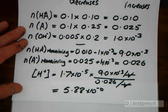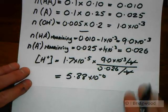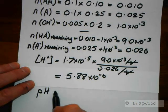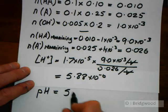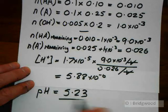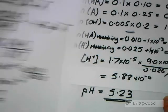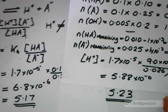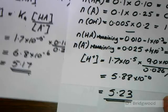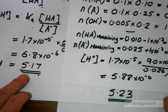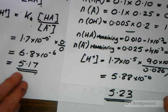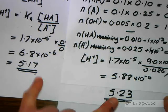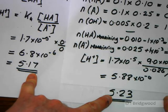And if I take the negative log of 5.88 times 10 to the minus 6, I can work out my pH: 5.23. And you can see that from my previous calculation, we ended up with 5.17. Here, we're ending up with a pH value of 5.23. Buffer solutions resist change in pH. They don't stop change.